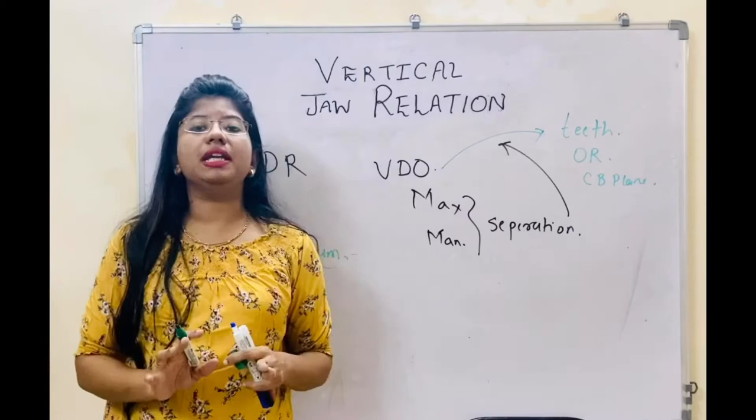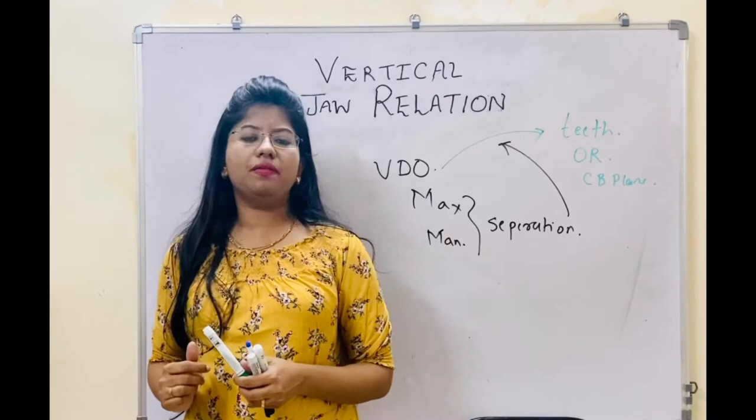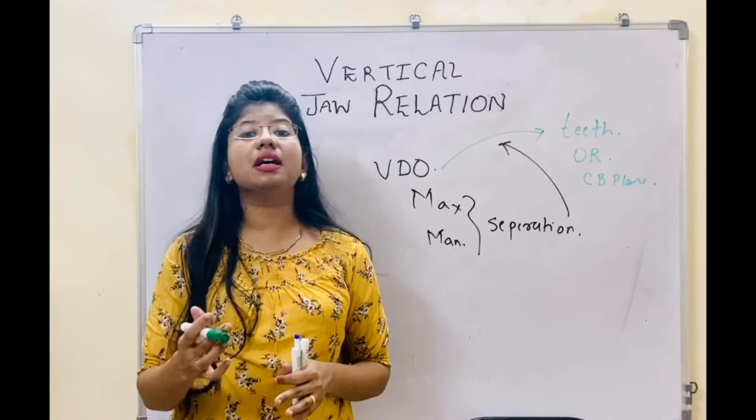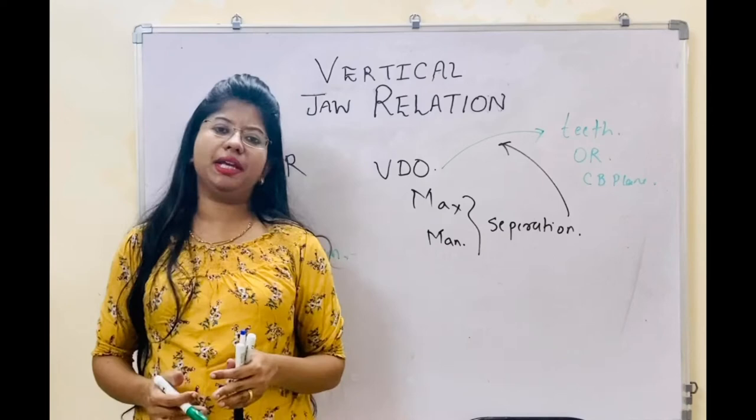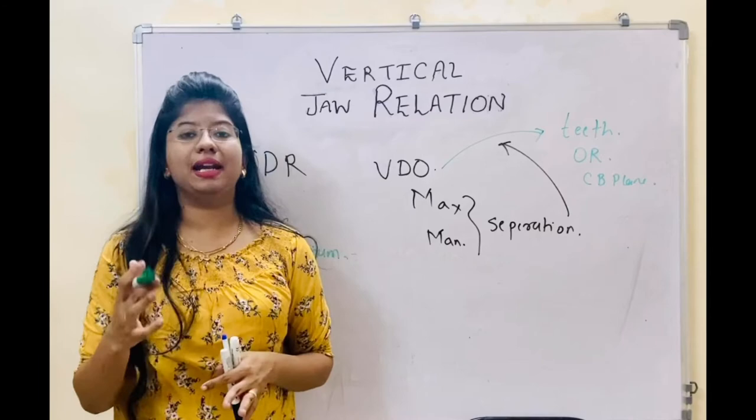Now we will see why it is important to record the vertical dimension. If you will not record this relation properly, there will be discomfort, there will be strain at the temporomandibular joint, and the patient will not be comfortable with whatever denture you are giving. So it is very important to record it correctly.